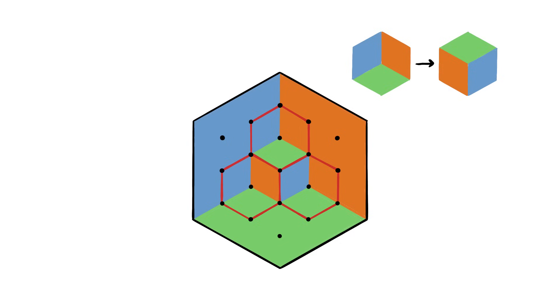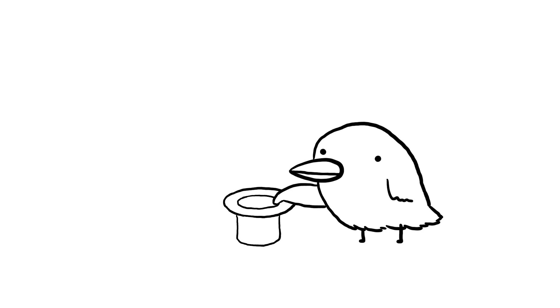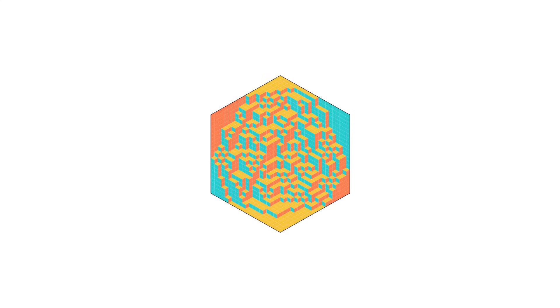This is way faster than generating every possible tiling and picking one randomly. Using that method without any tricks would take my computer longer than the age of the universe to make this picture right here, but with the algorithm that I just described, it takes less than an hour.